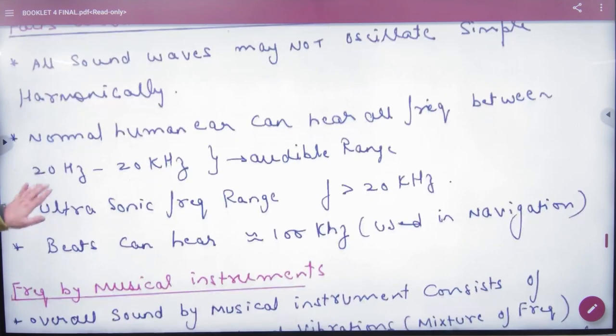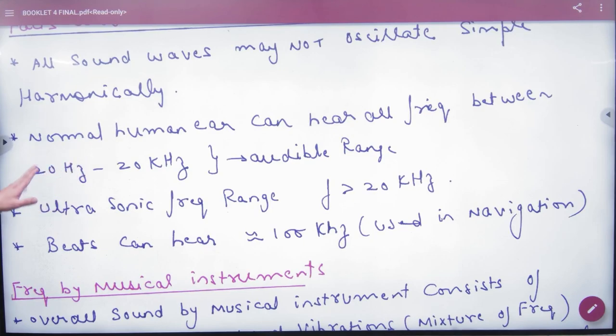Next, a normal human ear can hear all frequencies between 20 Hz to 20 kHz. This is the audible range.